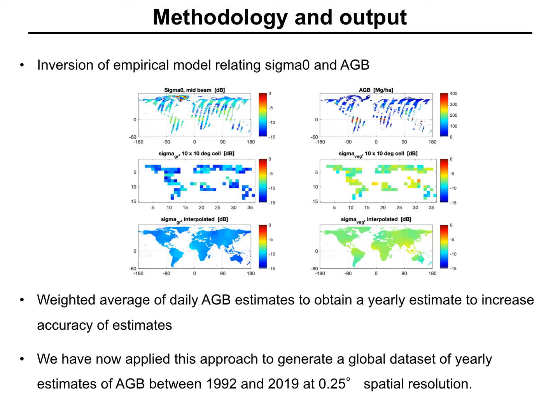We know that a single estimate of above ground biomass from a C-band measurement is quite uncertain. So what we do is combine in a weighted average all daily maps of AGB from a certain year and generate a weighted average. In the end, we obtain from 1992 to 2019 yearly maps of above ground biomass at 0.25 degree spatial resolution.